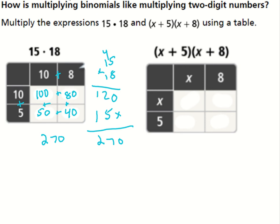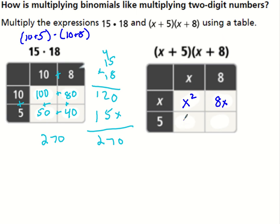We can set polynomials up the exact same way. This is x plus 8 times x plus 5 — the same idea as 10 plus 5 times 10 plus 8. Setting it up as a table: x times x is x squared, x times 8 is 8x, 5 times x is 5x, and 5 times 8 is 40. Now I add these up — x squared can't combine with anything. 5x and 8x make 13x. Then 40. I'm all done. I was able to multiply two binomials by making sure I multiply everything.